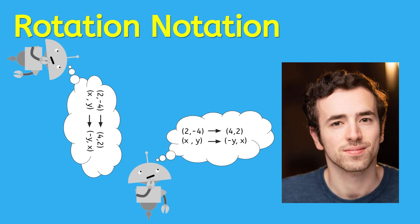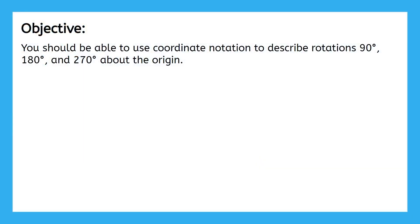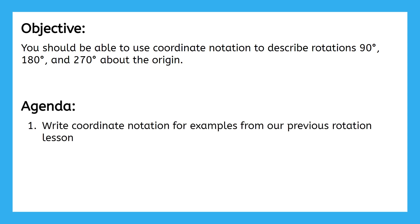Hey everyone, it's Justin again. In this lesson, we're going to use coordinate notation to describe the rotations about the origin that we worked with in our previous lesson. By the end of this lesson, you should be able to use coordinate notation to describe rotations 90 degrees, 180 degrees, and 270 degrees about the origin. First, we'll learn how to write coordinate notation for the three examples from our previous rotation lesson, and then we'll complete two additional examples similar to what you'll see in your practice.